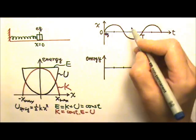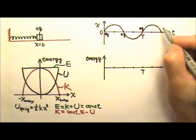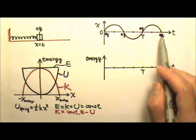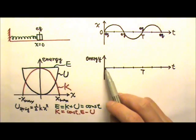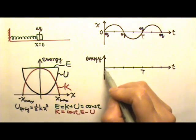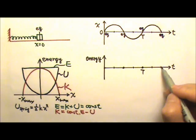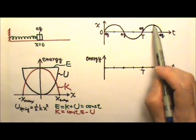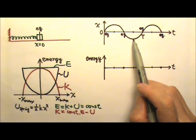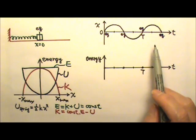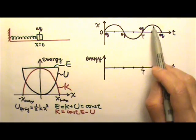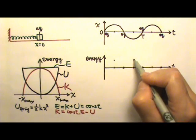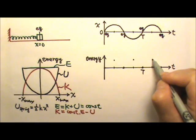The x equals zero points correspond to the equilibrium positions on the time graph — here, here, here, and here — and so they all correspond to zero potential energy. For the potential energy graph, these are the zero potential energy points. Those x equals positive x-max or negative x-max correspond to the end points, which means the potential energy is maximum at these locations.